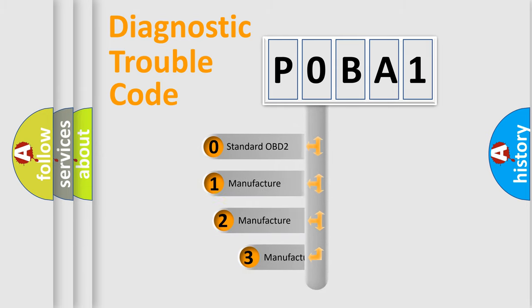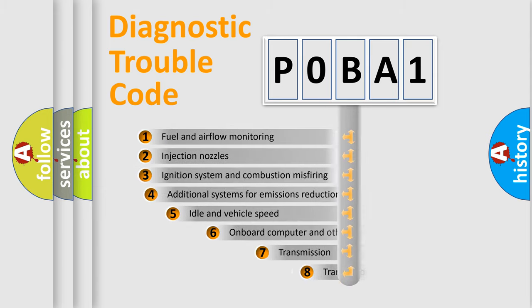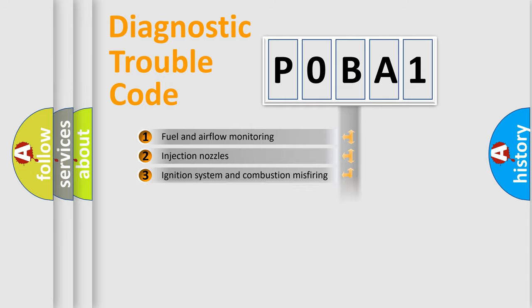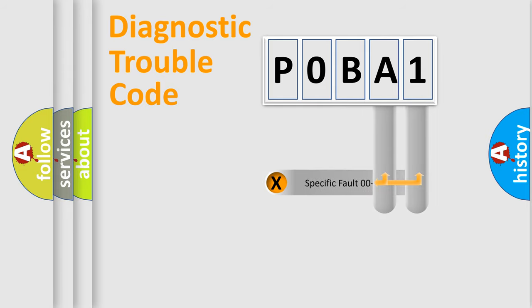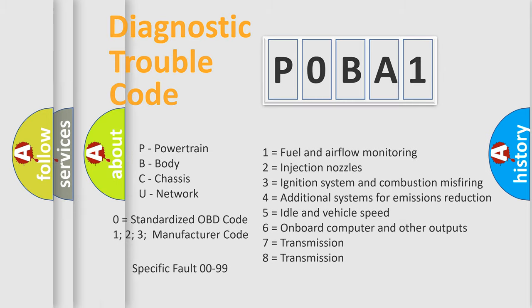If the second character is expressed as zero, it is a standardized error. In the case of numbers 1, 2, or 3, it is a more specific expression of a car-specific error. The third character specifies a subset of errors. This distribution is valid only for the standardized DTC code. Only the last two characters define the specific fault of the group. This division is valid only when the second character is expressed by the number zero.